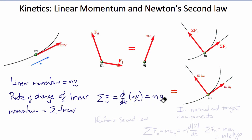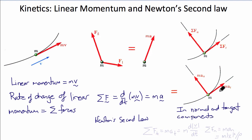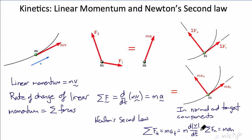Newton's second law states that the sum of the external forces — shown here as F1 and F2 — equals mass times acceleration a. We can also write this in terms of normal and tangential components. The sum of the tangential components Ft equals m times at, which from our earlier analysis is m times the rate of change of the magnitude of velocity. Similarly, the sum of the normal forces equals m times an, where an is the magnitude of velocity squared divided by rho, the radius of curvature of the motion.